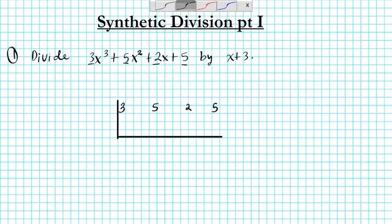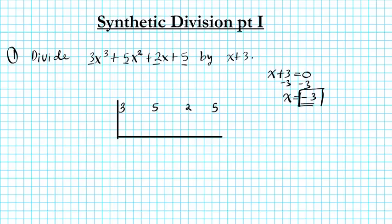And now whatever you're dividing by, you take the opposite. So you have x + 3. So if I say that equal to 0, subtract 3 from both sides, x equals negative 3. This is what I'm going to use to divide my polynomial coefficients.